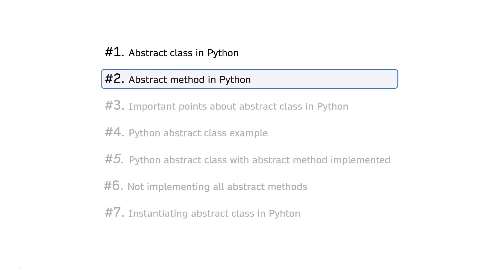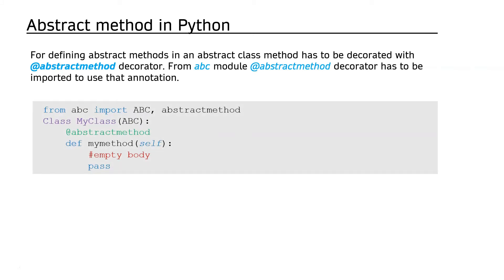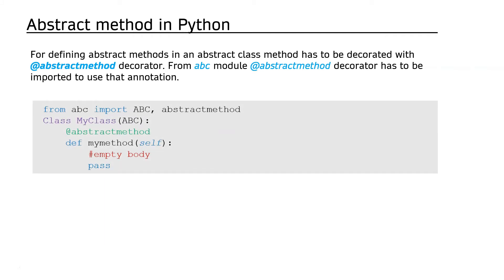For defining an abstract method in an abstract class, the method has to be decorated with the abstract method decorator from the abc module. The abstract method decorator has to be imported to use that annotation. Here is an example of how the syntax looks for defining an abstract method in an abstract class in Python.